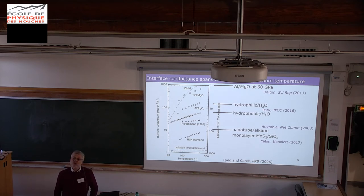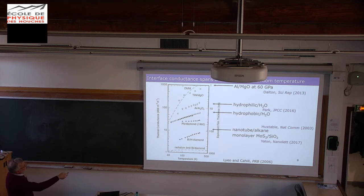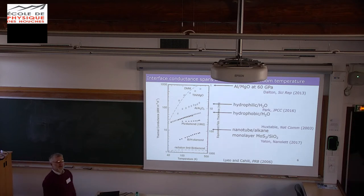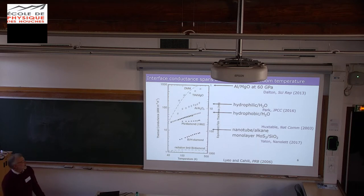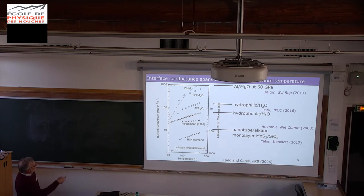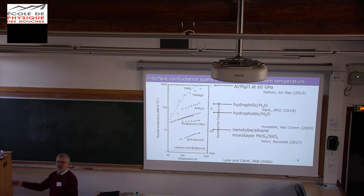The highest thermal conductance interface we've ever studied — which I think is the record — is a little exotic: aluminum on MgO at 60 gigapascal inside a diamond anvil cell. 60 gigapascal is about the pressure halfway to the core of the earth, in the mantle. This gives a very high conductance, approaching gigawatts per square meter per Kelvin. So I can put the output power of a nuclear power plant through a square meter of this type of interface and it produces only one degree of temperature drop.